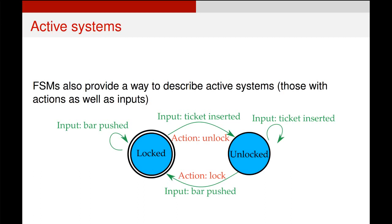The doors we've been talking about previously are passive systems — our description has no impact on the system itself, but this one does. The double circle on the left-hand side indicates a starting state. By default we start in the locked state. You can push the bar on a turnstile when it's locked and nothing will happen, but you can insert a ticket. When you insert the ticket, the action that happens on this machine will unlock it, taking us to the unlocked state. If we keep inputting the ticket after that, it stays in the unlocked state. Then when we push the bar, the action will be to lock it and take the turnstile back to its basic state.